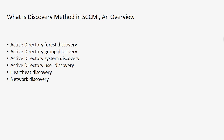Hello everyone, welcome back. In the last video we saw the overview of the SCCM console. Now in this video we are going to learn what the SCCM discovery method is — a basic overview of the types of discovery methods, how they work, and how we can enable them, followed by a lab in the same video. In SCCM, discovery means finding devices, users, user resources, and other identities such as network infrastructure in your environment. SCCM has around six types of discovery methods.